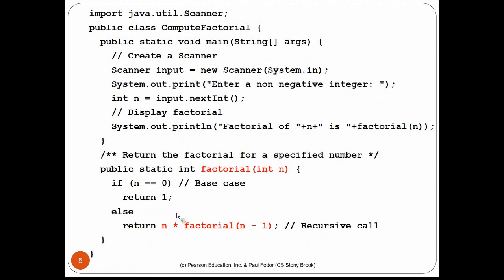In Java we would implement it like this: a main method asks the user to enter a non-negative integer, reads that integer, checks it's ≥ 0, and invokes factorial(n). The method factorial takes an integer n and returns an integer. If n equals 0 — the base case — we return 1; otherwise we return n × factorial(n−1). This is a recursive call — we call the current method with a different parameter.